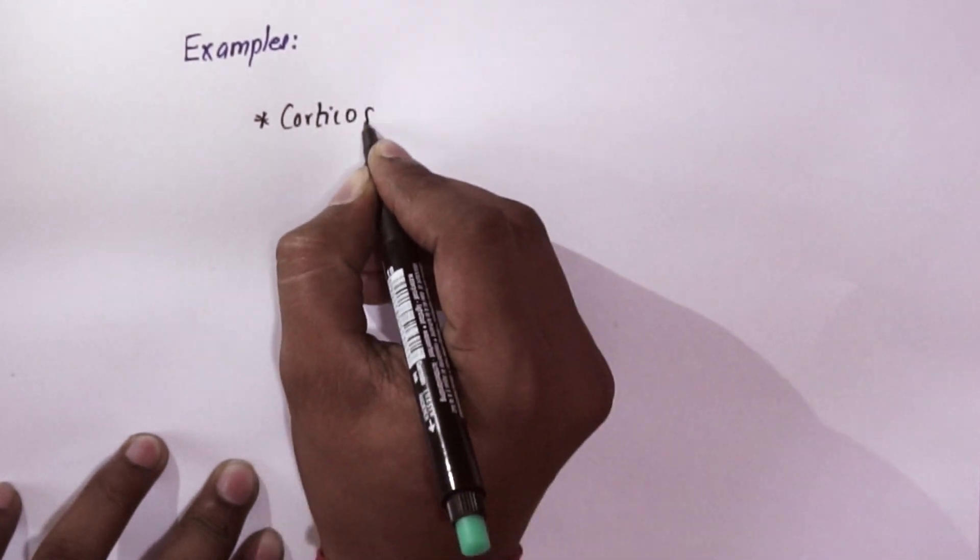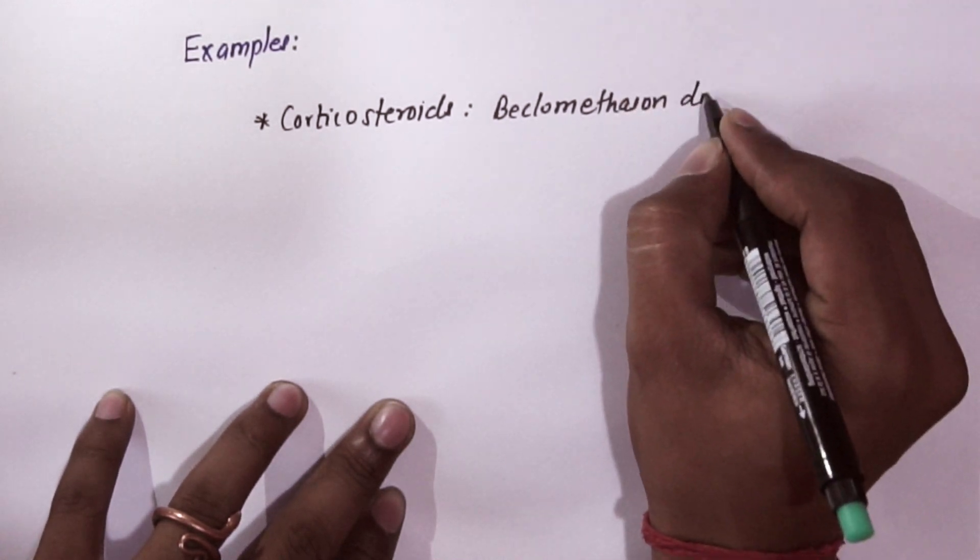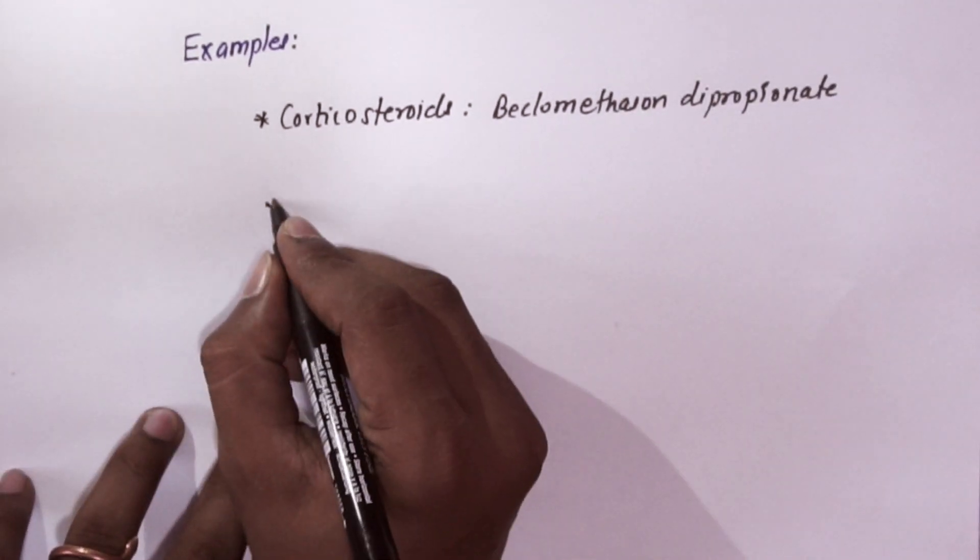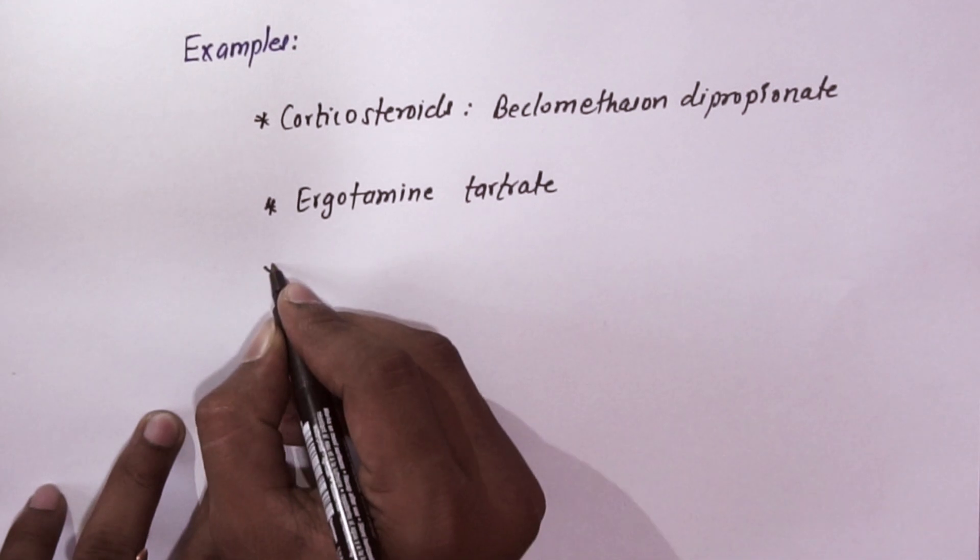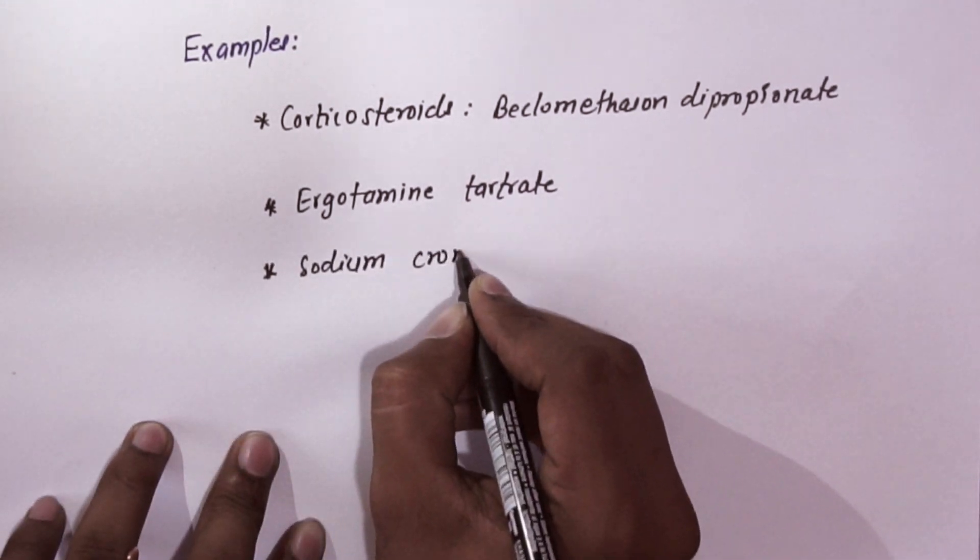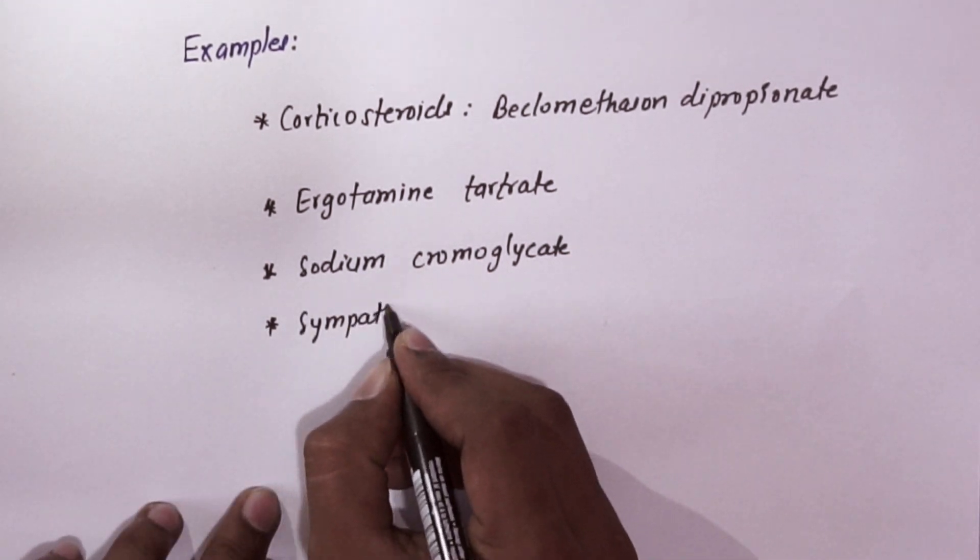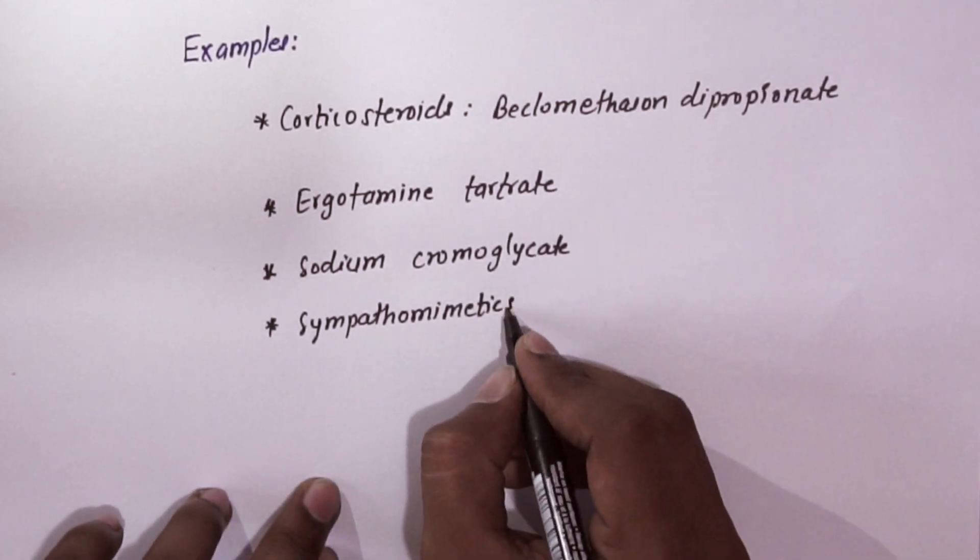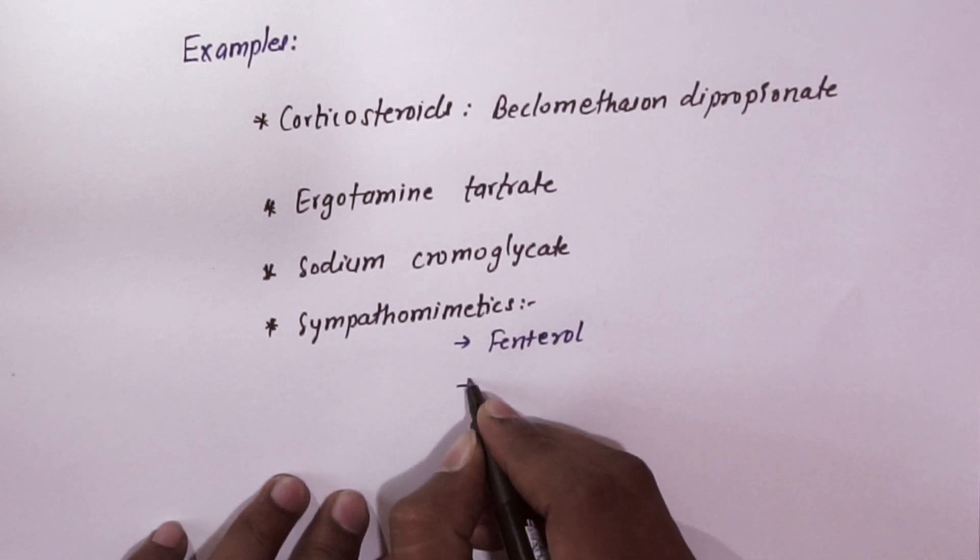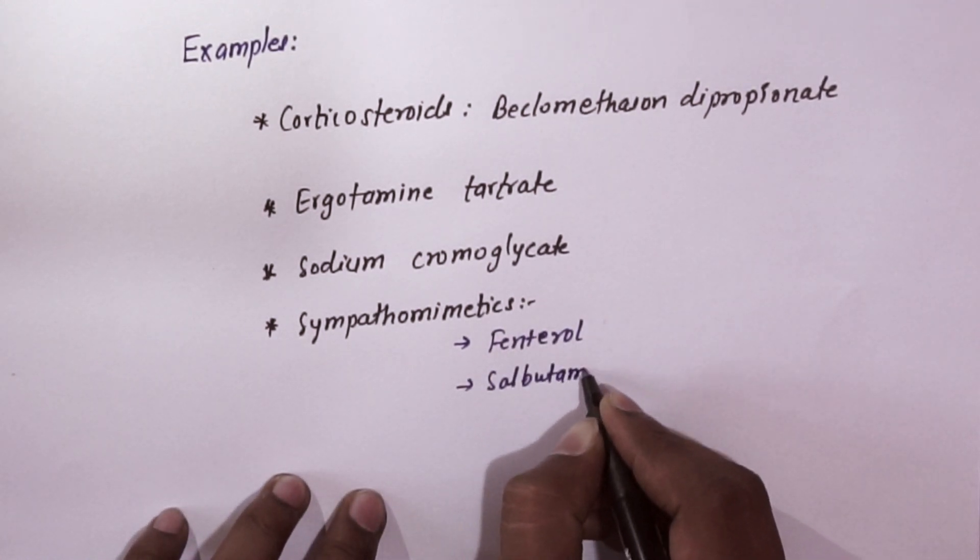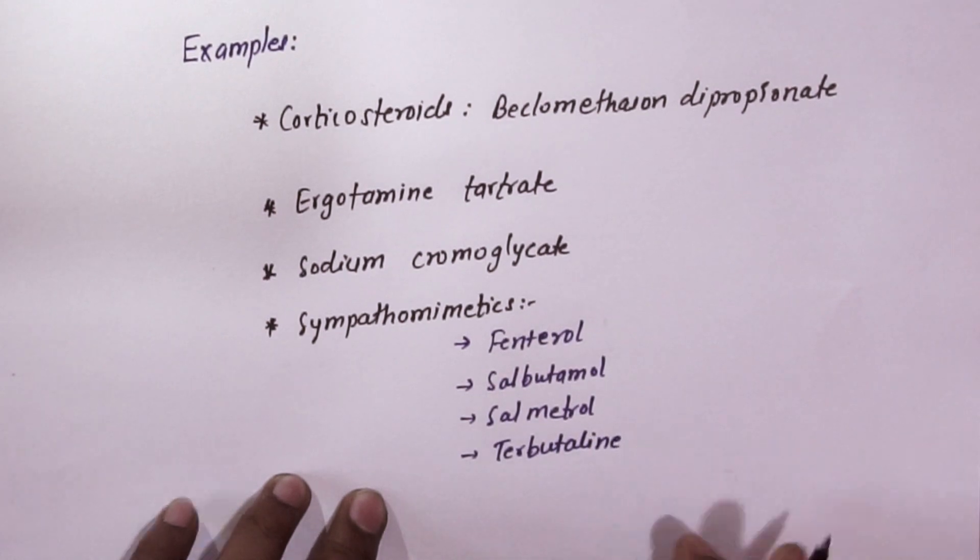Now we will discuss about examples. So the first one is corticosteroids. Examples are beclomethasone dipropionate, then ergotamine tartrate, sodium cromoglycate. Then sympathomimetic drugs, for example, ventrol, salbutamol, salmeterol, and terbutaline, etc.